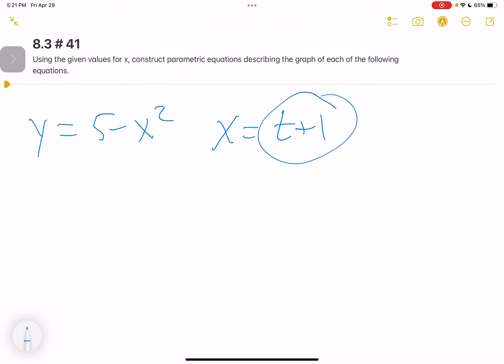So I'm going to be putting this t plus 1 in place of the x there. So y equals 5 minus the quantity t plus 1 squared.